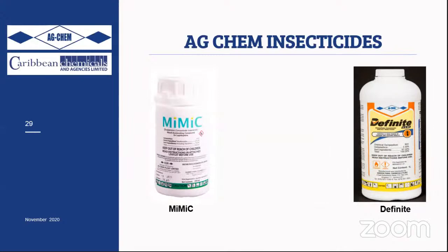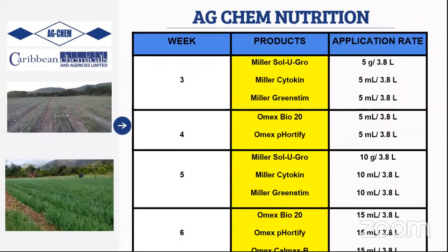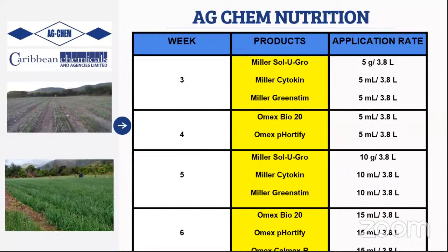The insecticide product range — including Karate, Cartap, Mimic, and others in different sizes and SKUs — is displayed. Now moving to one of the most important parts of the presentation: the Agchem cropping program, which can take yields from 18,000–20,000 pounds per acre up to 45,000 pounds per acre.